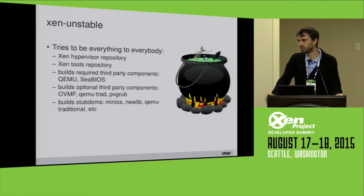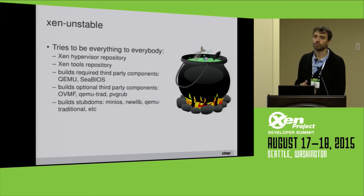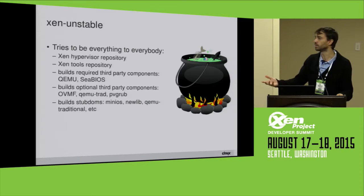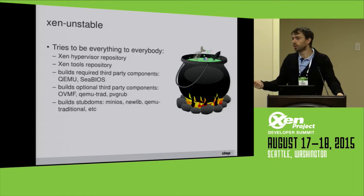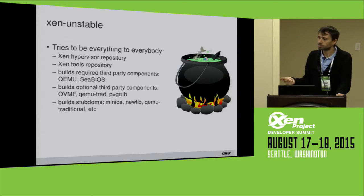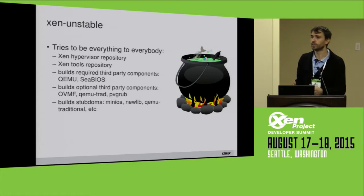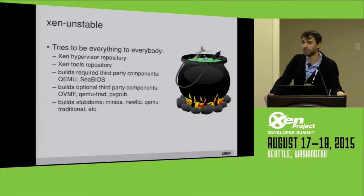There is also the world of stub domains — small utility domains which provide services to guests. The best example is probably QEMU stub domains, where one instance of QEMU runs in one stub domain to do device emulation for one guest, for security purposes. To build a QEMU stub domain, you need to clone QEMU, clone MiniOS (a library kernel), build them against Newlib (a libc), glue it all together and get a stub domain kernel. It's not simple and the current build system, to be honest, is pretty bad.